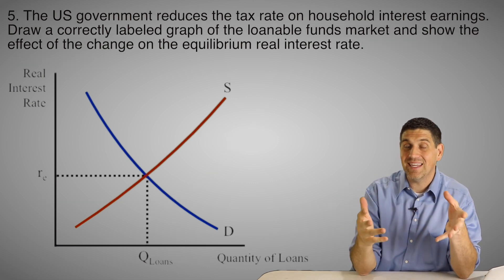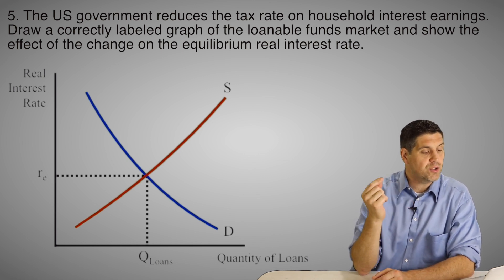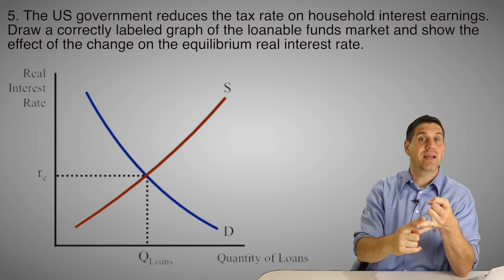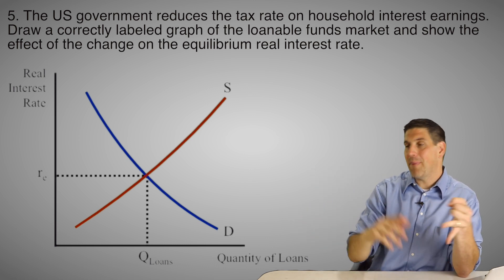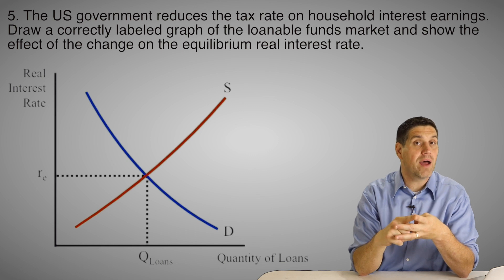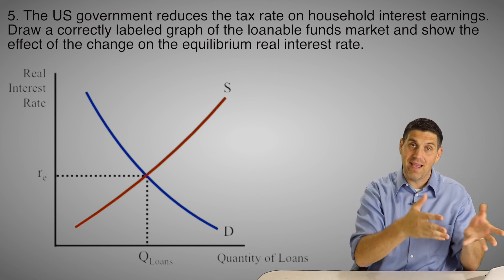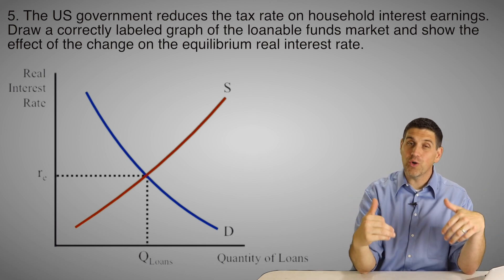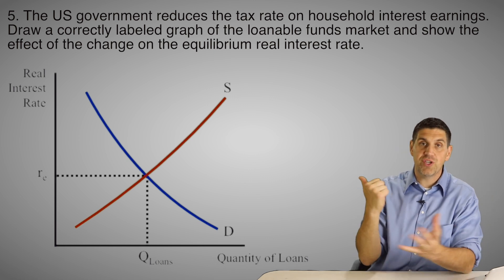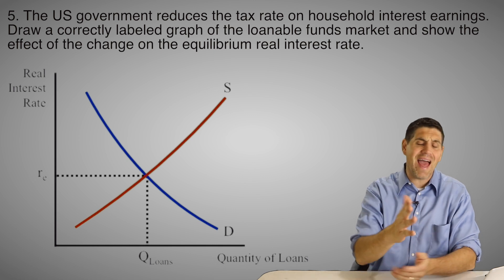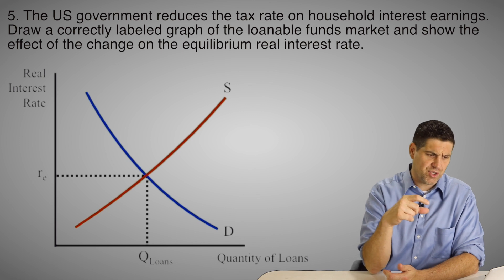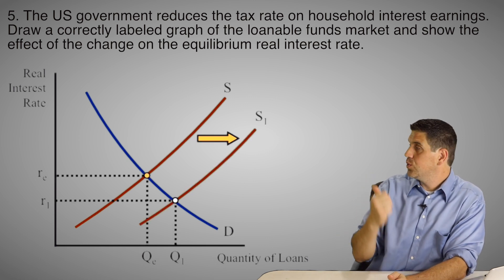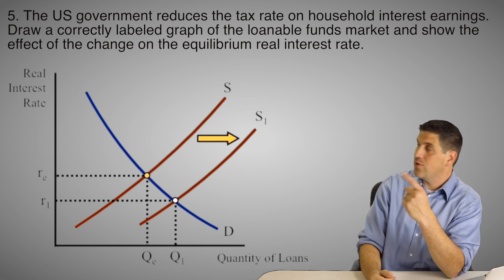The last one, question number five, was from the 2018 macro free response. It says the government reduces the tax rate on households' interest earnings. People have money to buy goods and services — that's consumption — but they can also buy assets like real estate, stocks, bonds, or interest-bearing assets that give them future money. In this case, if you buy a bond you're going to get a tax break on the interest paid back, so you don't have to pay as much taxes. That increases the incentive to save. So basically this question is saying there's an increase in savings in this country. The reduction in the tax rate on interest earnings increases the supply of loanable funds, which decreases the real interest rate and increases the quantity of loans.